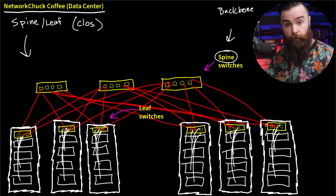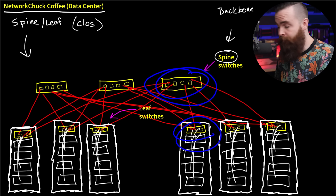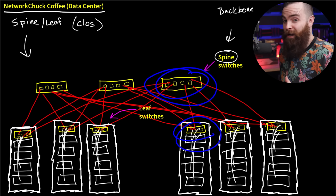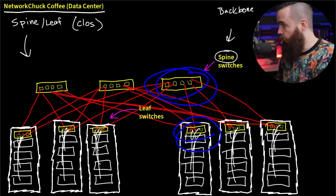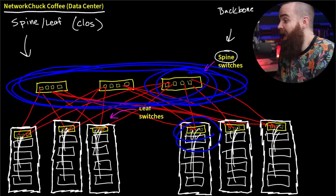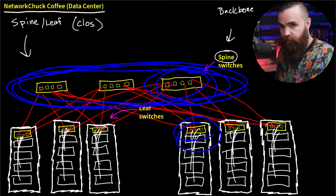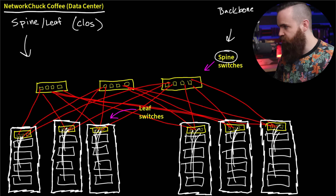Quick recap: leaf switches are your access layer, spine switches are your backbone - slightly beefy, can handle a lot. They are our workhorses. They themselves don't have to be these massive multi-chassis switches because they share the load amongst themselves. The traffic is load balanced across these equally, which is possible because we have a full mesh. Every leaf switch is connected to every spine switch. Also notice these spine switches themselves don't connect to each other. We go a bit cable crazy, but a maximum of two hops for any server-to-server communication.